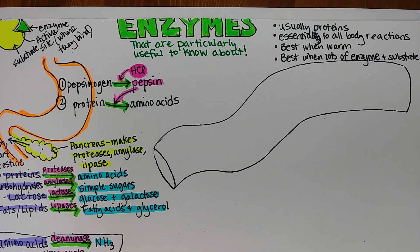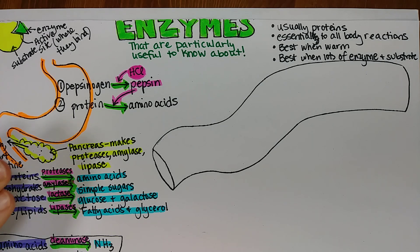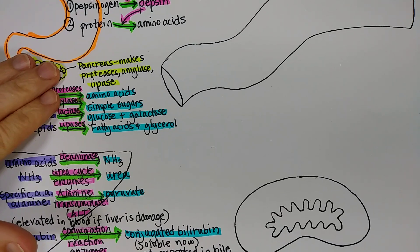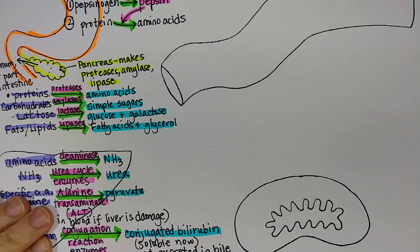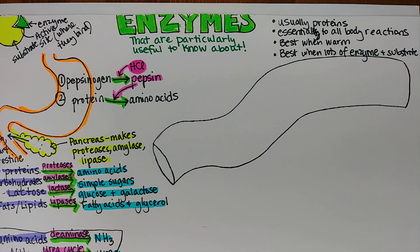Onward we march on our page on enzymes. We have been discussing particularly important enzymes to learn about in the body, especially if you will be studying anatomy and physiology or generally like to know how your bodies work. We've gone through important enzymes in the digestive system, talked about some in the liver, and now I would like to talk about a little bit in the blood vessel.